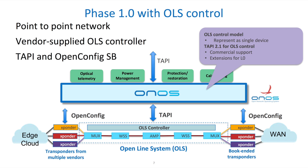The next step for the ODTN project is to have a complete point-to-point connection all controlled by ONOS by including between the two transponders an open line system that, through an OLS-specific controller, will be managed by ONOS through the Transport API interface on the southbound, while keeping OpenConfig for the transponders and the Transport API interface from the ONOS northbound too.